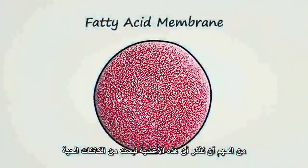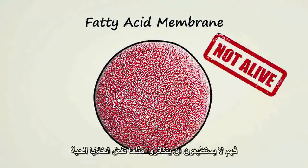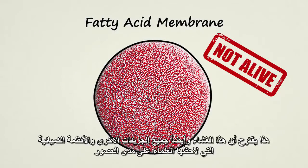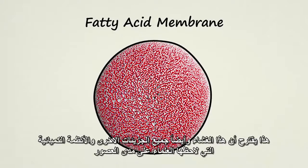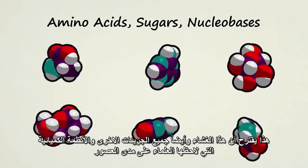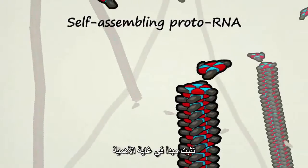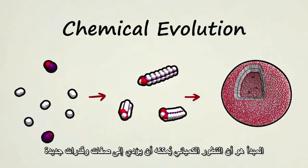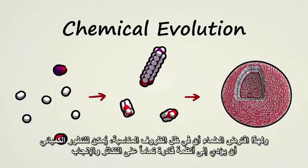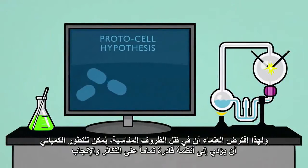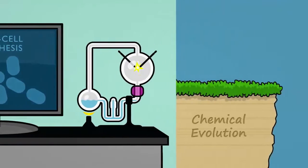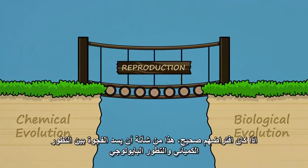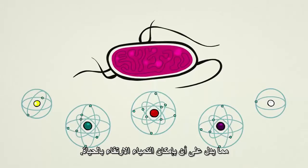It's important to note that these membranes do not qualify as living creatures — they can't reproduce on their own the same way living cells do. That said, the development of these membranes, along with many other molecules and chemical systems that scientists have observed, demonstrate an extremely important principle: chemical evolution can give rise to new characteristics and abilities. Because of this, scientists hypothesize that under the right circumstances, chemical evolution could give rise to systems that are fully capable of reproduction. If they are correct, this would bridge the gap between chemical evolution and biological evolution, demonstrating that chemistry can indeed give rise to life.